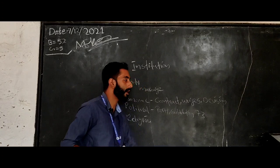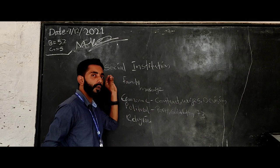You can say social institutions - the family, economic, political, and religion. Family is very important.